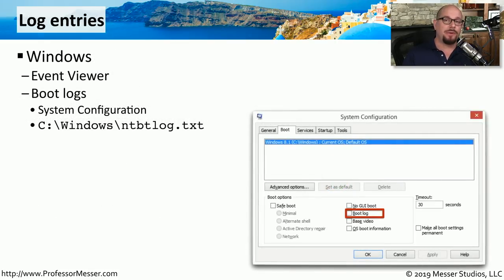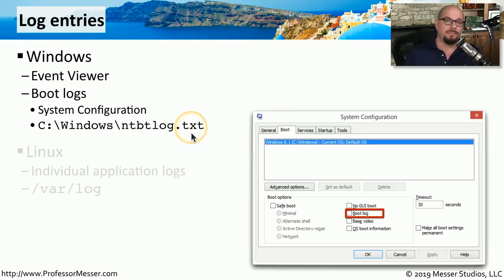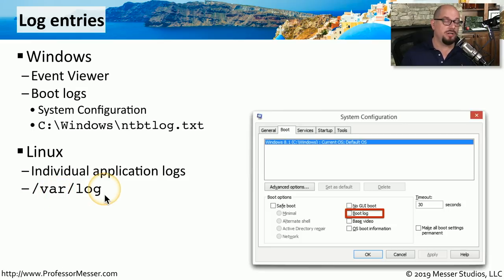Throughout this video, we've been talking about gathering information from the logs. So let's look at where these logs are stored in the different operating systems. In Windows, there is Event Viewer, where a centralized repository of logs is available for applications, security, the operating system, and all other components of the OS. When you're booting, there are a series of logs that are created during the boot process. You can turn this on inside of System Configuration — there's the option for boot log. And Windows will store that log under C:\Windows\ntbtlog.txt. Inside of Linux, you'll find most logs for the operating system and for applications under /var/log. And in Mac OS, you can view a consolidated view of logs in the Utilities folder using the Console app.